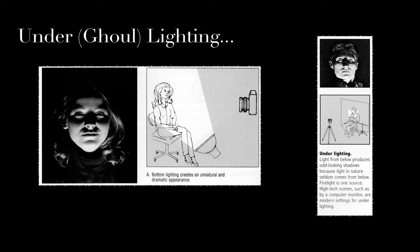Probably the most recognizable is ghoul lighting, or what we call under lighting — this is putting your light source directly under the person's face, aimed up at their face. If you've ever been camping and told ghost stories around the campfire, you've probably put a flashlight under your face to make it more intense. This is totally an effect lighting — none of you are going to do portraiture this way.